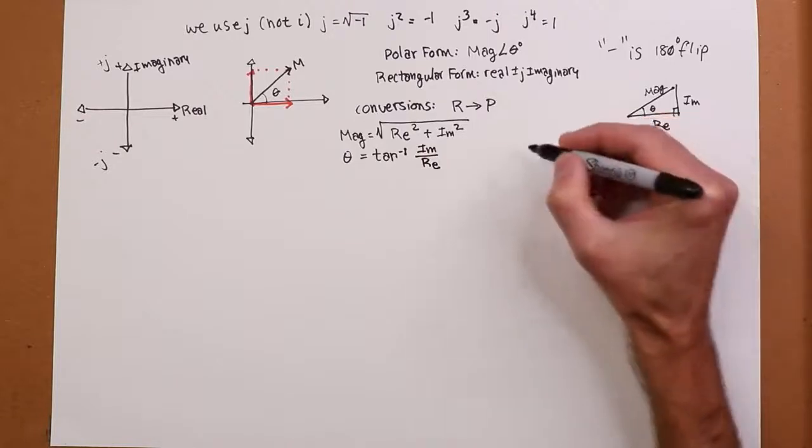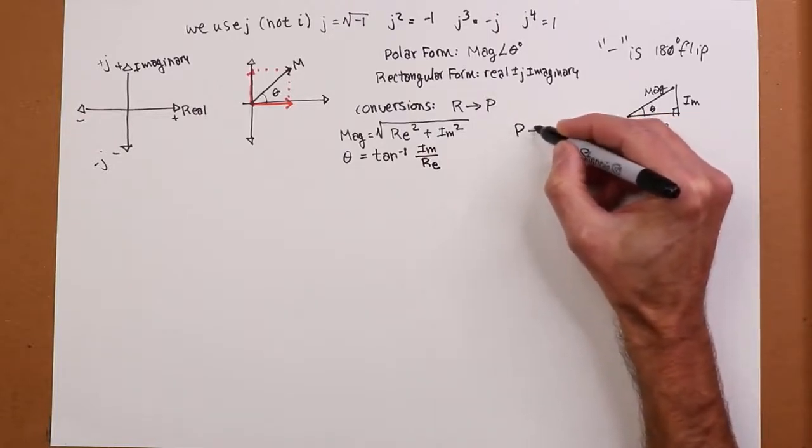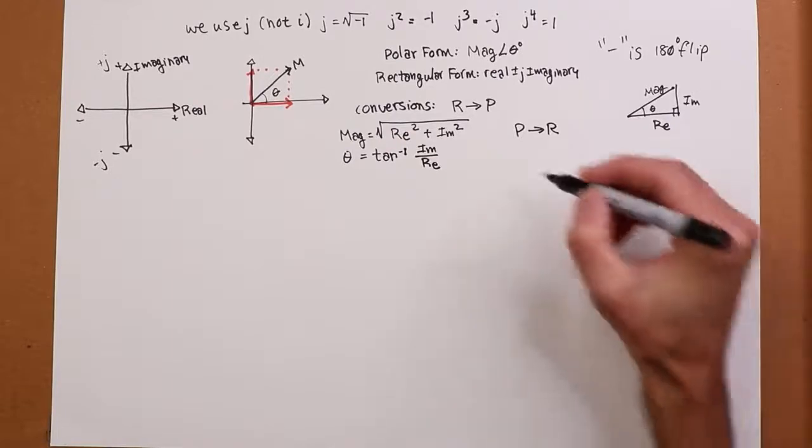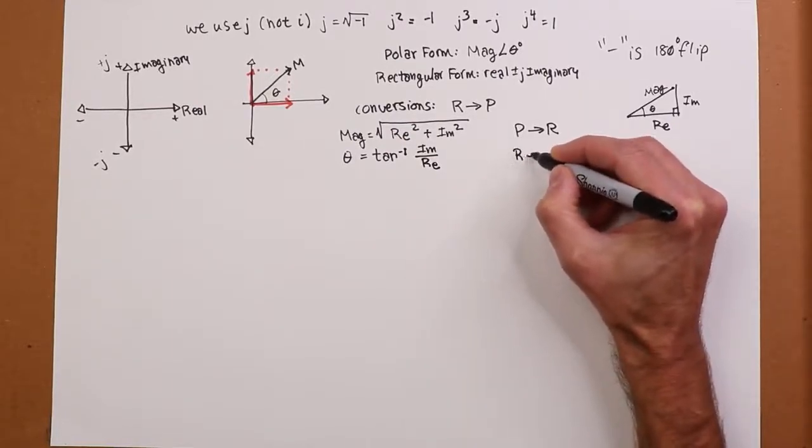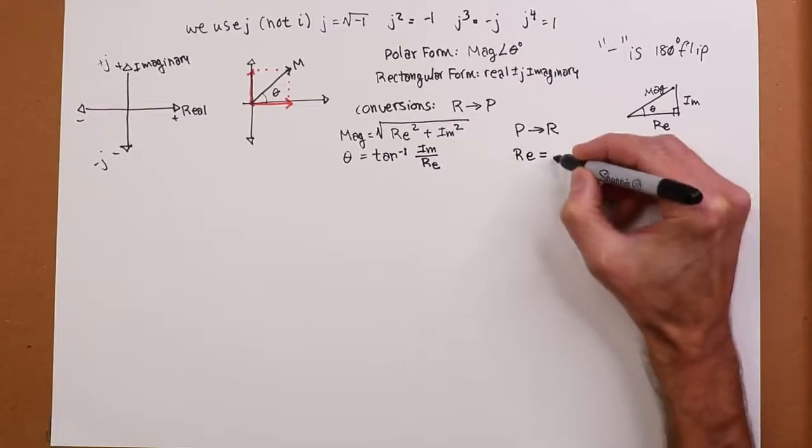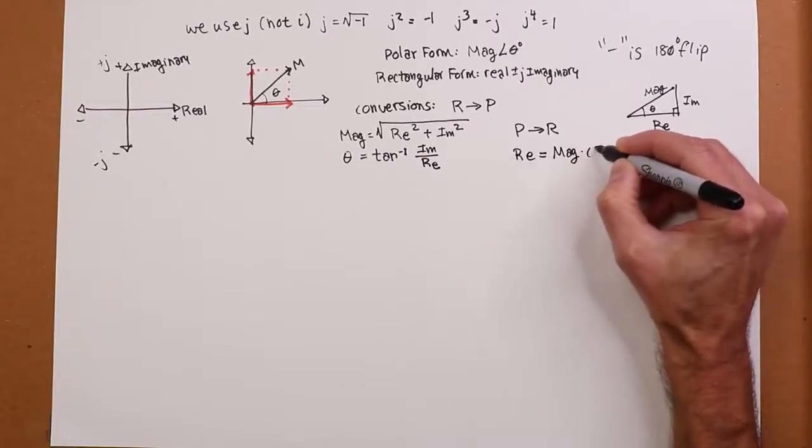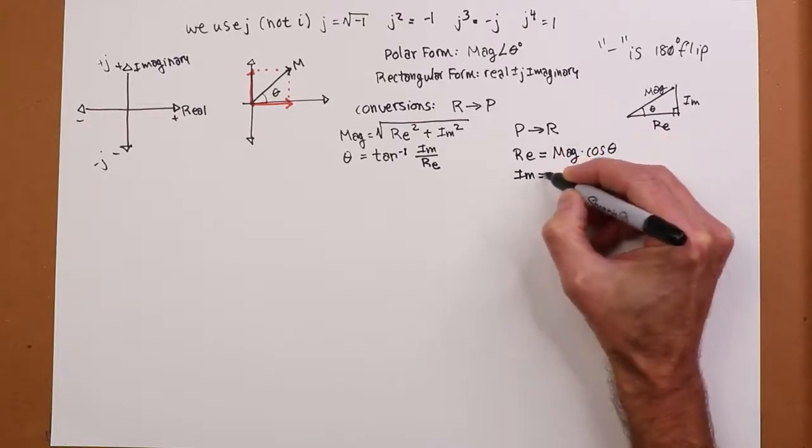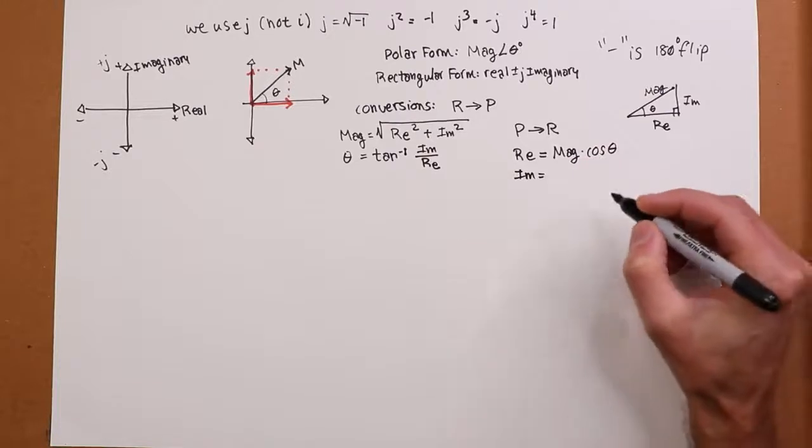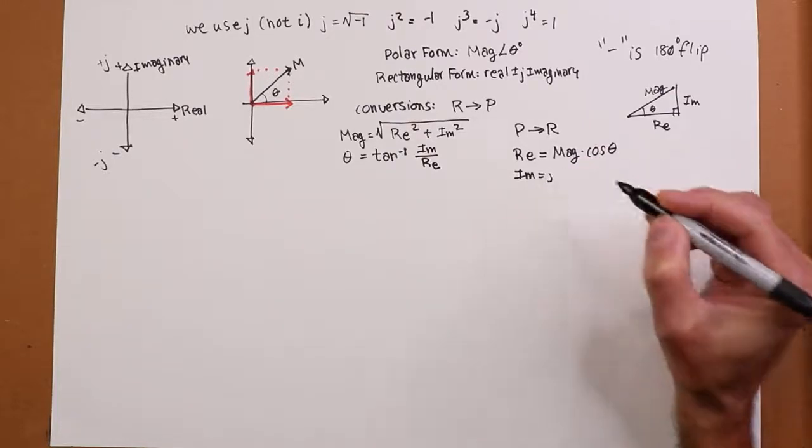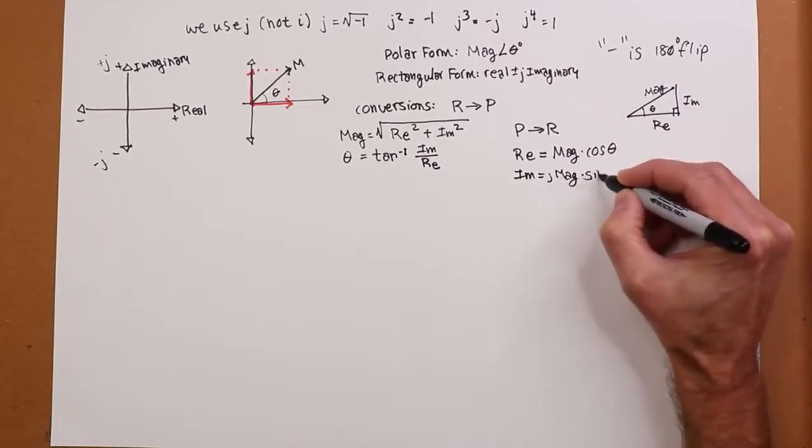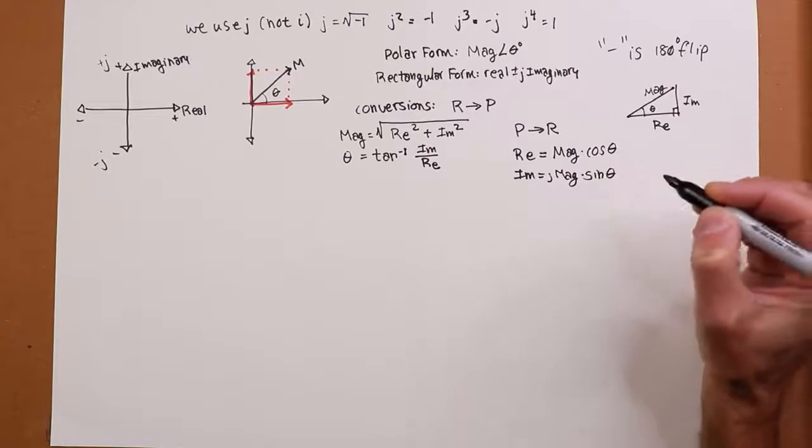What about going the other way? I want to go polar to rectangular. In other words, we have the magnitude and the angle, I want to get the real and the imaginary. To get the real part, we simply take the magnitude and multiply it by cosine theta. And to get the imaginary part, that is going to be J times the magnitude sine theta.